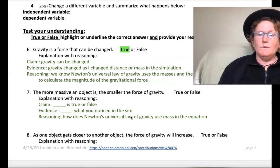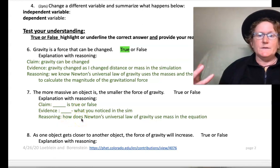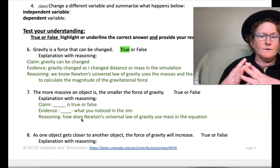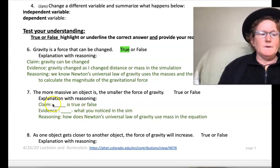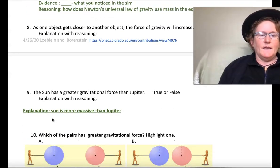For the next one, I set you up. The more massive an object is, the smaller the force of gravity. Is that true or false? So your claim would be explaining why it's true or that it's true or false. The evidence should support your reasoning that it's true or false with evidence you noticed in the sim. And then the reasoning is how does Newton's law of gravitation figure in the evidence that you saw in the simulation. So remember to use claim, evidence, reasoning for 6, 7, 8, and 9.